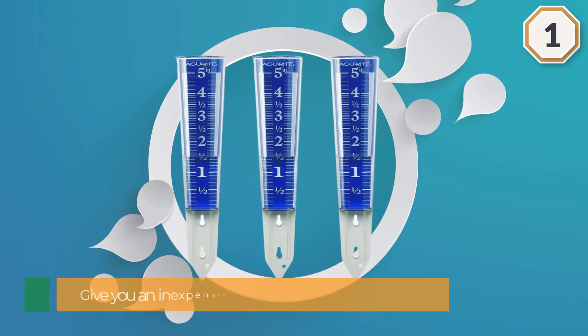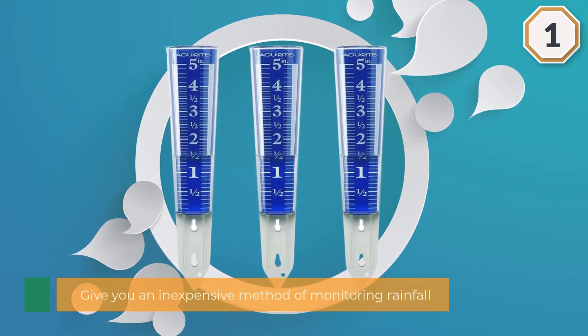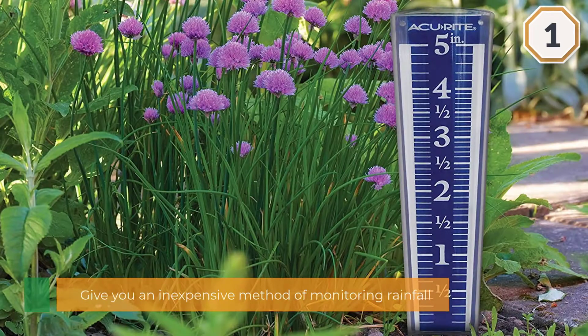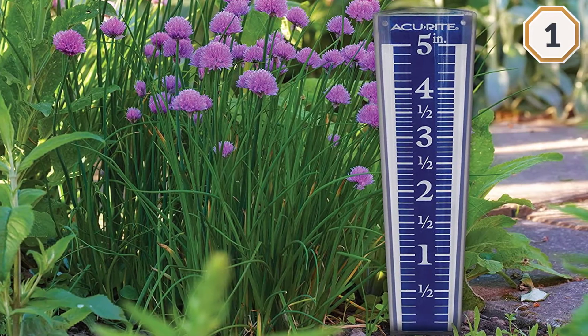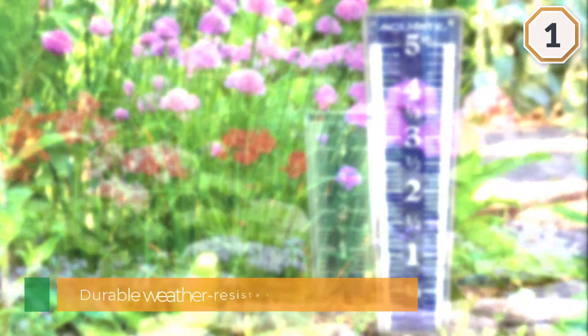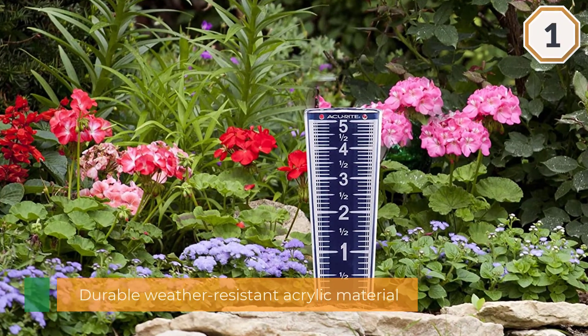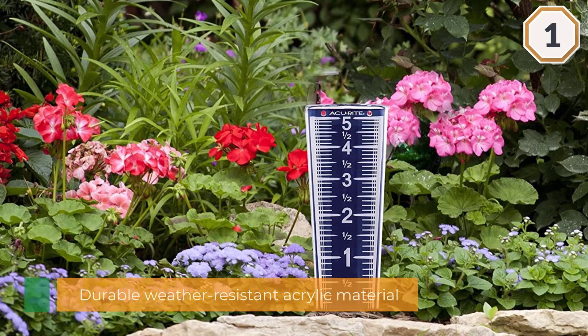The AccuRite 00850A2 magnifying rain gauge is a simple device designed to give you an inexpensive method of monitoring rainfall for any purpose. It is made of durable weather-resistant acrylic material. It is calibrated in inches and measures up to 5 inches of rainwater at a time.